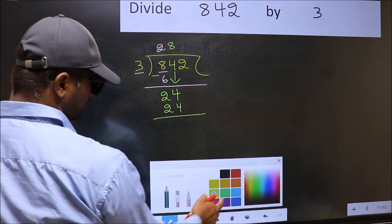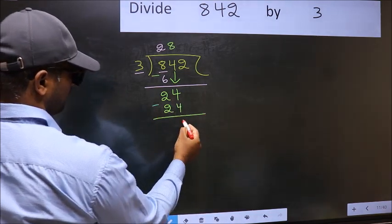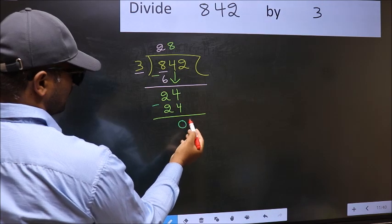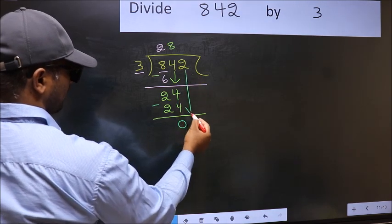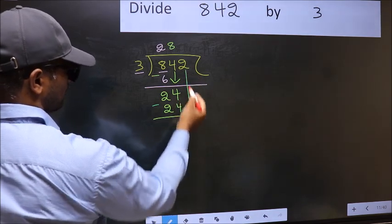Now you should subtract. 24 minus 24 is 0. After this, bring down the beside number. So 2 down.